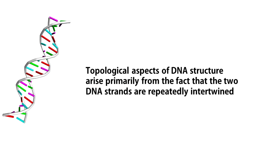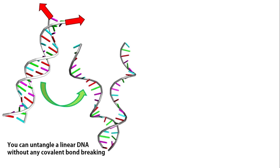Topological aspects of DNA structure arise primarily from the fact that the two DNA strands are repeatedly intertwined. Let us think about how to untangle these two strands. Consider a simple case of a linear DNA in solution. You can untangle the two strands just by pulling them in two different directions. No covalent bonds are breaking.